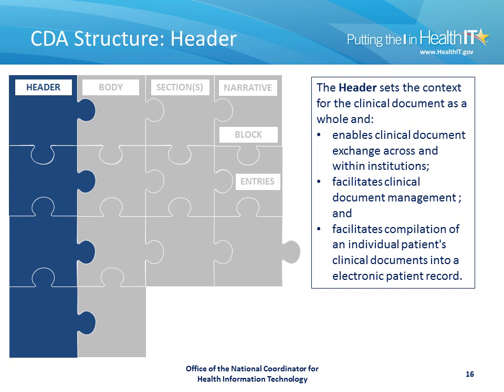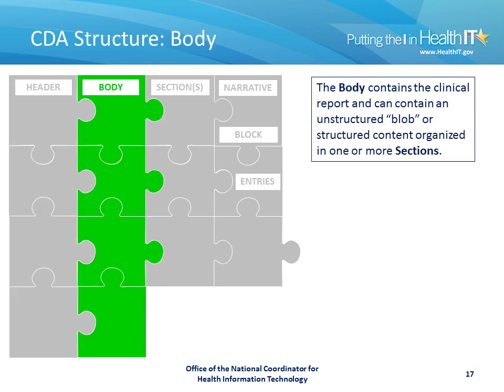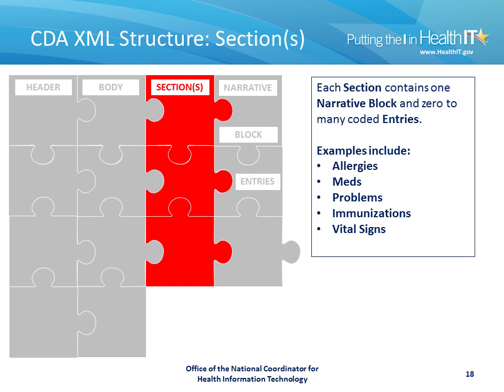The header sets the context for the clinical document as a whole, and it enables clinical document exchange across and within institutions by identifying the context for the document. It facilitates clinical document management, and it facilitates compilation of an individual patient's clinical documents into an electronic patient record. The body of a document contains the clinical data, and it can contain an unstructured blob in the form of a scanned image, a text file, or any other file, or structured content organized into one or more sections. Each section contains at least a narrative block, and also can contain zero or many coded entries. Examples of sections would be allergies, medications, problems, immunizations, and vital signs.